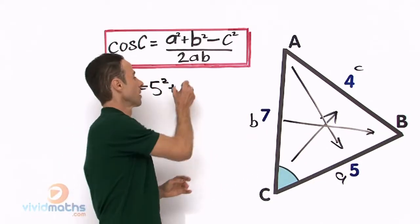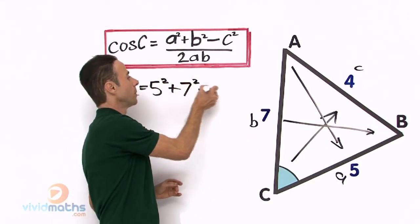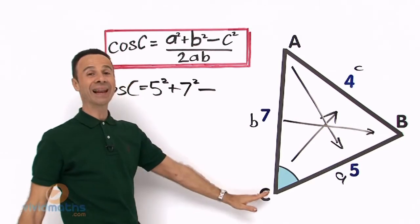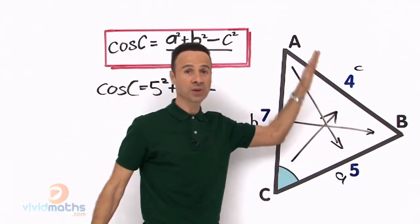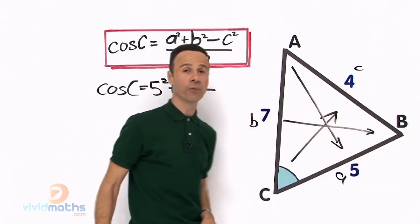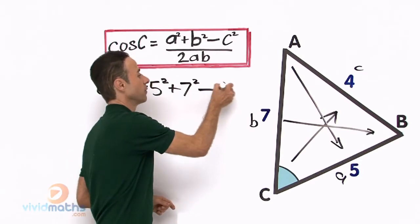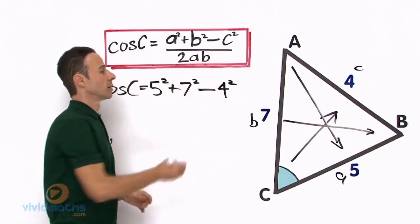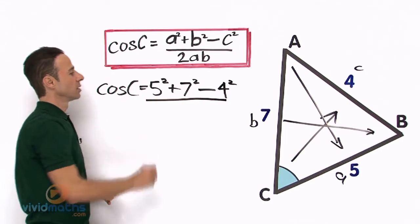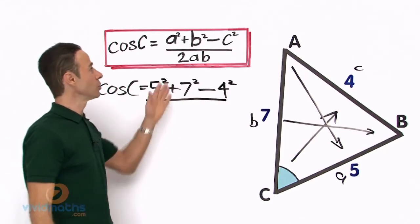Let us have a look at little b, goes from big B to little b, that is going to be 7, yeah, minus directly opposite the angle we are looking for, directly opposite, that length there is 4, so that is going to be 4² as the formula indicates.